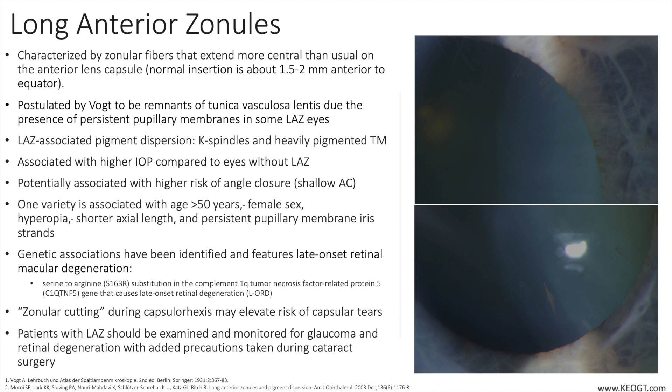It was postulated by Vogt to be remnants of the tunica vasculosa lentis due to the presence of persistent pupillary membranes in some eyes with LAZ.